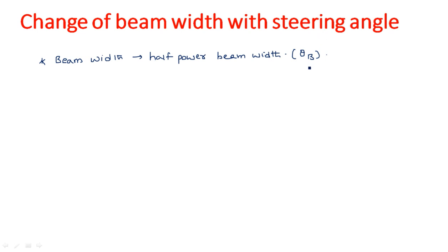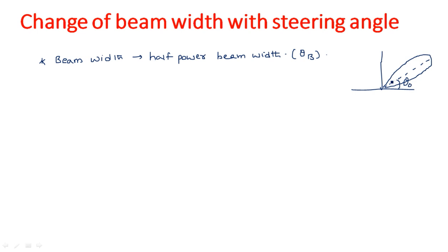Suppose this is the plane of your antennas and the normal is 90 degrees from the plane of surface. The angle at which the radiation pattern is going to be transmitted is indicated by theta naught. The half power beam width is found by drawing two tangentials, and the width between these two half power points is theta B.